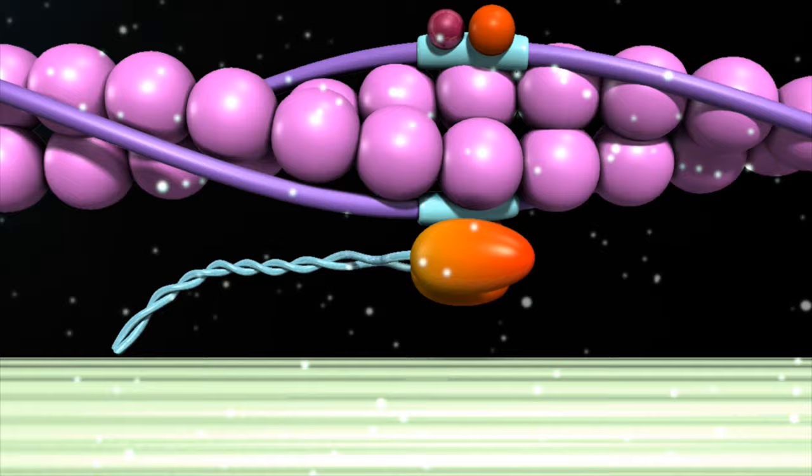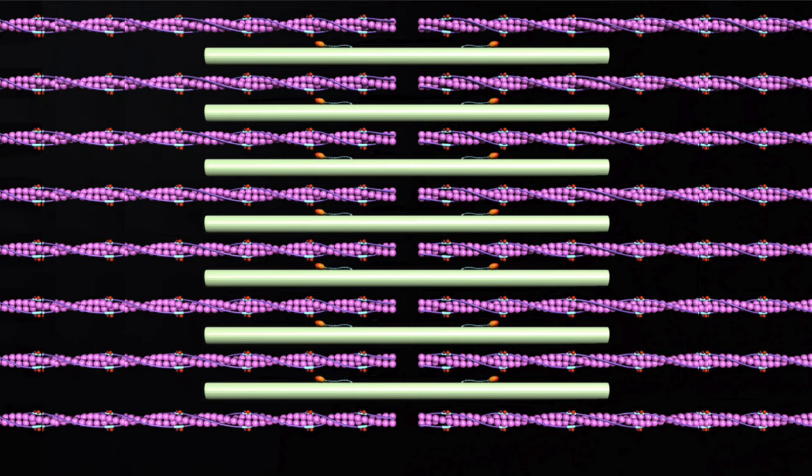This repeated pulling of the actin over the myosin is often known as the ratchet mechanism. This process of muscular contraction can last for as long as there are adequate ATP and calcium stores.